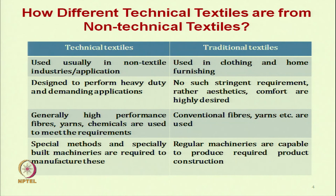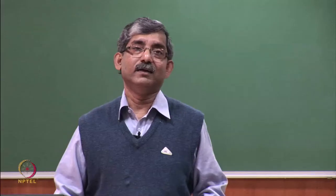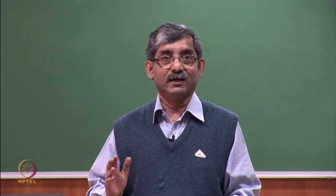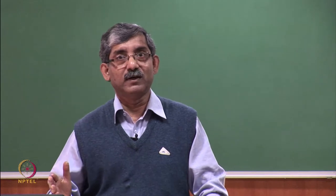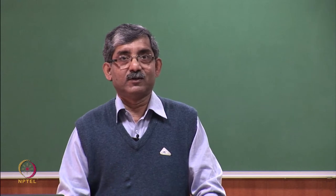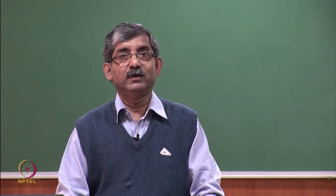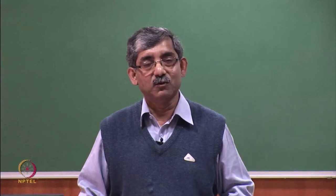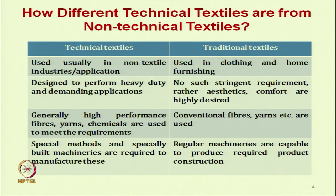Let us try to understand the difference between technical and traditional textiles, which will help us understand the ways to develop technical textiles and shift from traditional to technical textiles. In technical textiles, we use the product mainly in non-textile industries — for example, automotive textiles where automotive industries use filter fabric. But in traditional textiles, use is basically limited to clothing and home furnishing.